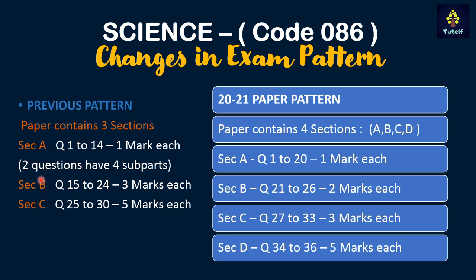In Section B there were three-mark questions from question 15 to 24, and in Section C there were five-mark questions from question 25 to 30. Now in the latest pattern for 2020 to 2021, the Science paper will contain four sections.